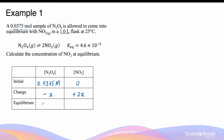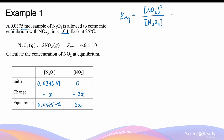Combining the initial and change rows, the equilibrium concentration of N2O4 is 0.0375 minus x, and that of NO2 is 2x. We then write the equilibrium expression: Keq equals the product concentration squared divided by the reactant concentration. So 4.6 × 10⁻⁵ equals (2x)² divided by (0.0375 minus x).